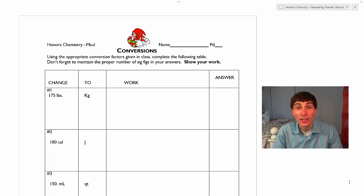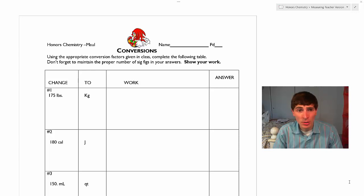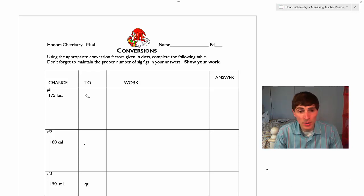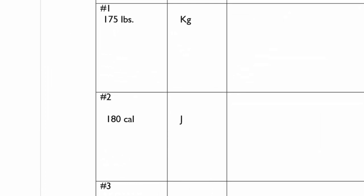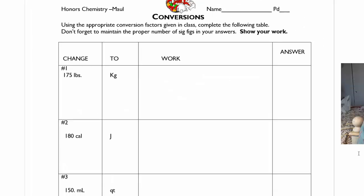Greetings, everyone. This is Mr. Mullen. In this video, I'm going to show you a couple examples from the conversion worksheet to help you get started. One of the first things you need to do as you go through these problems is figure out what type of unit you're looking at. For example, question number two has you going from calories to joules. You're going to need to recognize that calories and joules are units of energy.